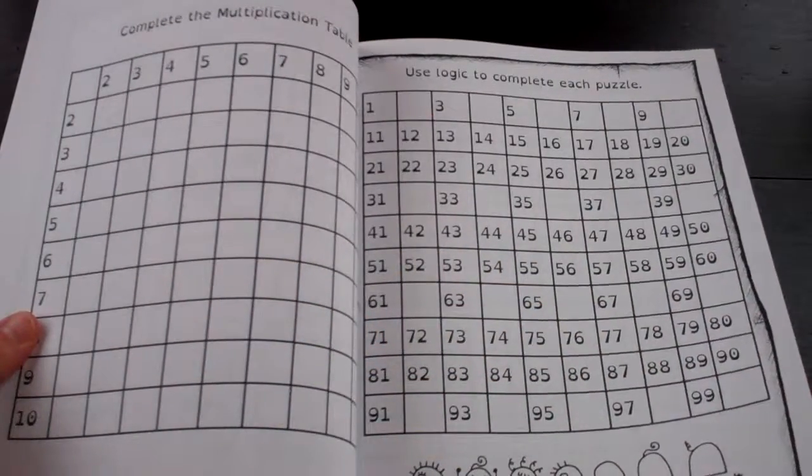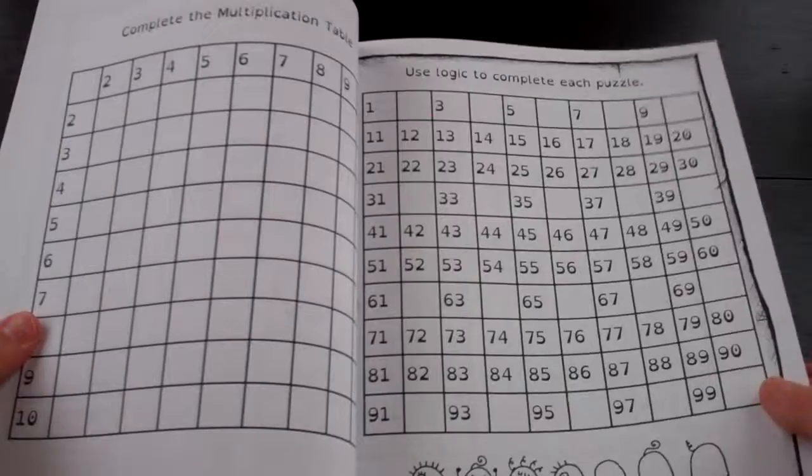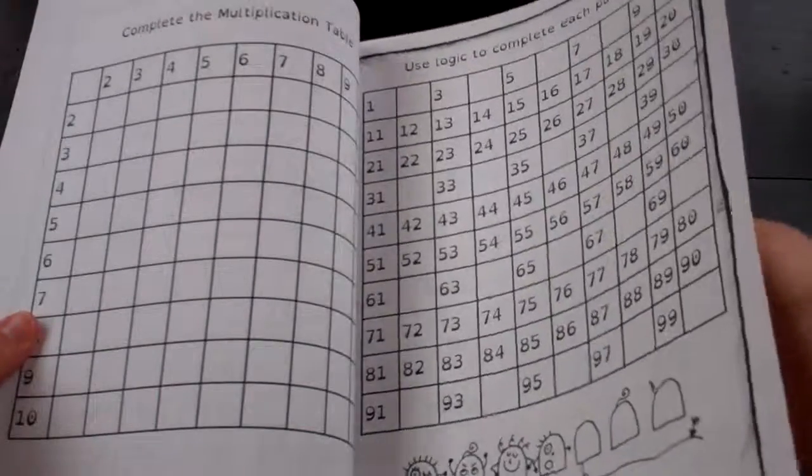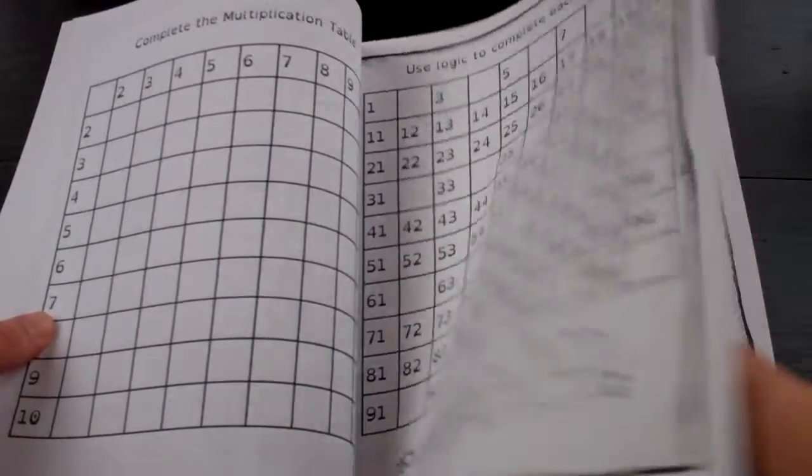And this is just a hundred sheet right here. So there's a multiplication table and then a hundred sheet.